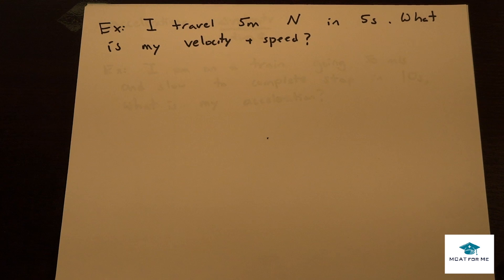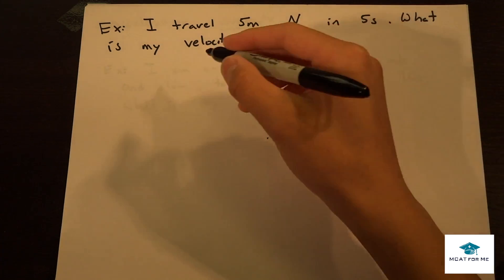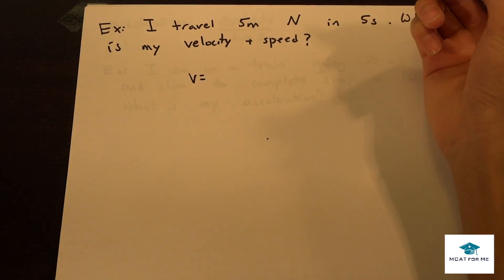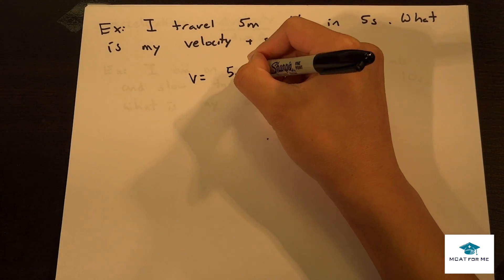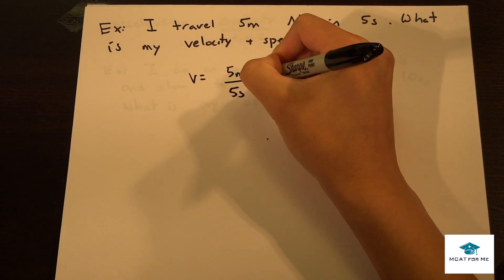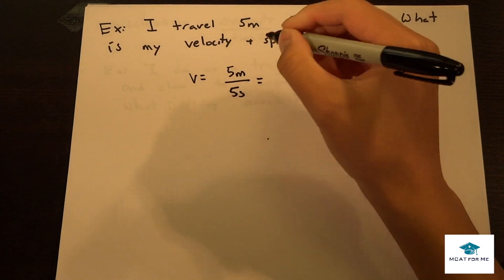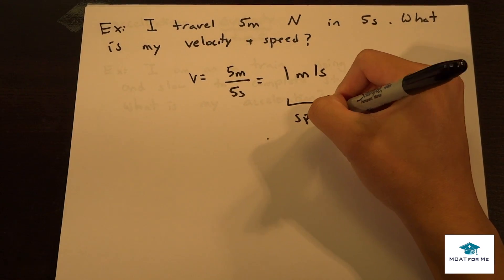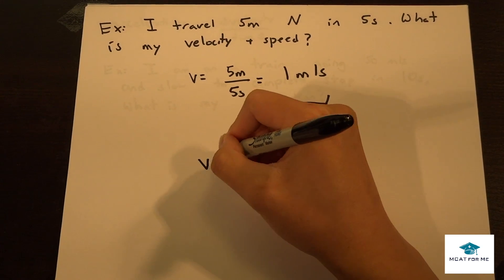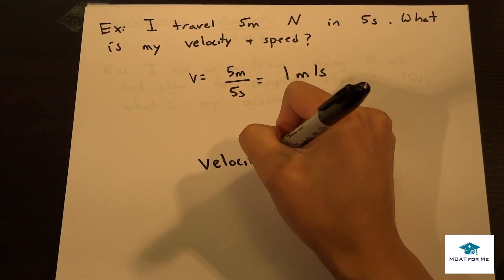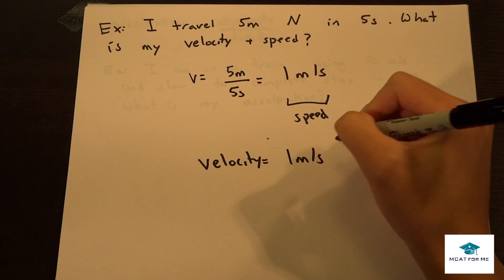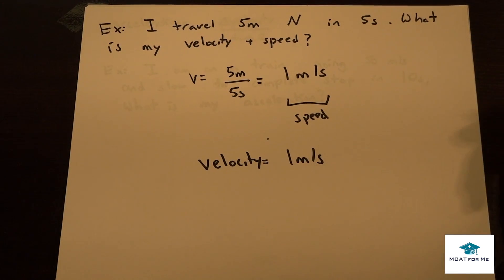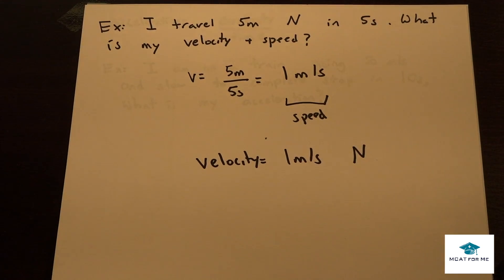Here's an example: I travel 5 meters north in 5 seconds. What is my velocity and what is my speed? Velocity equals the amount we traveled over the time: 5 meters over 5 seconds equals 1 meter per second. By itself, that's the speed. For velocity, we add direction — so 1 meter per second north.